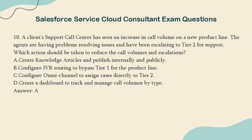A. Create knowledge articles and publish internally and publicly. B. Configure IVR routing to bypass Tier 1 for the product line. C. Configure omni-channel to assign cases directly to Tier 2. D. Create a dashboard to track and manage call volumes by type. Answer: A.